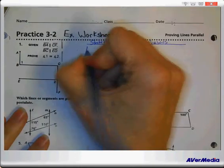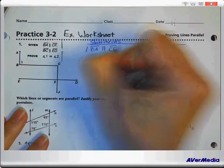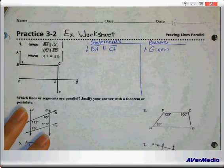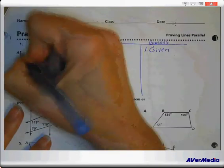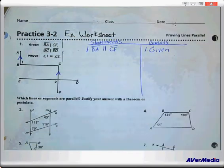My first one is that segment BA is parallel to segment CF, and that's given. Now, like any good geometry student would do, you mark the fact that these two things are parallel.